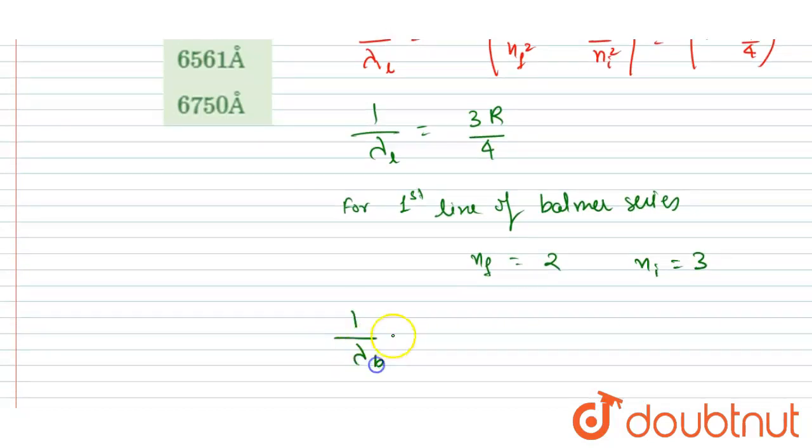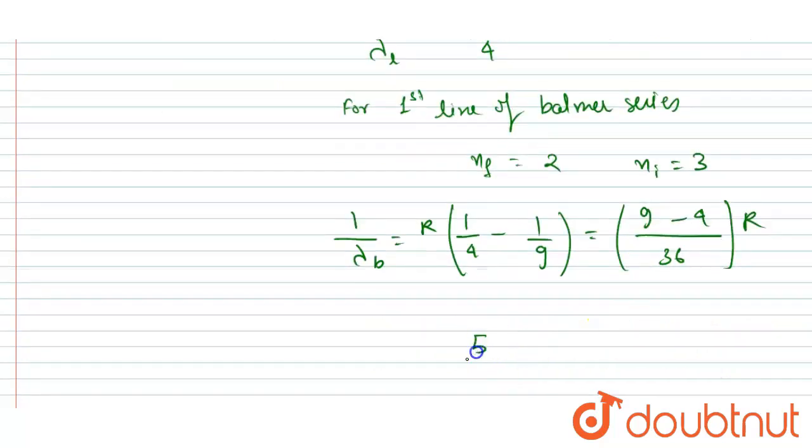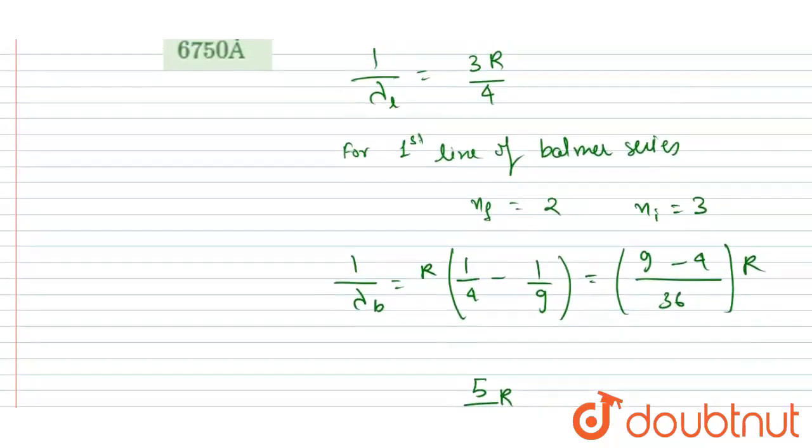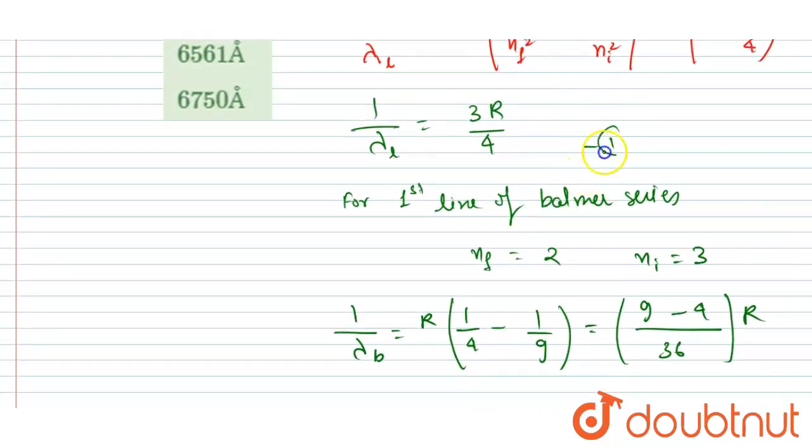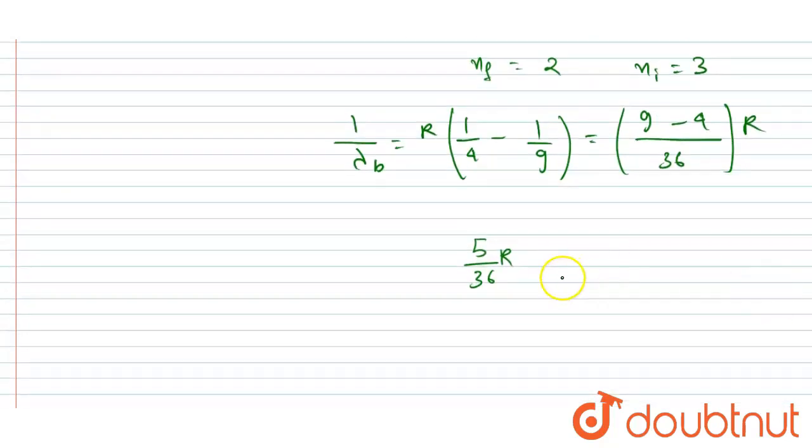I will write λ_b equals R times (1/4 - 1/9). If you take 36 as LCM, you will write 9 minus 4, so you will get 5/36 times R. We want this λ_b, right? This is equation 1, and this is equation 2.